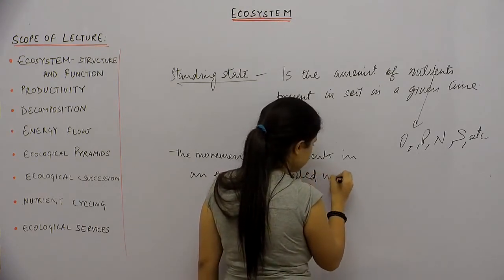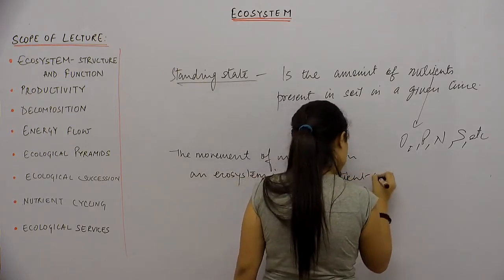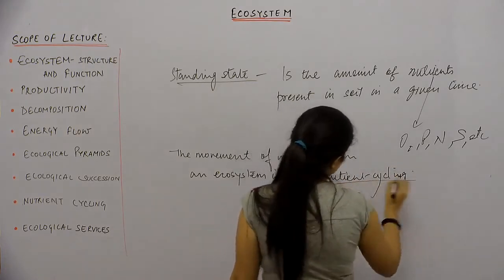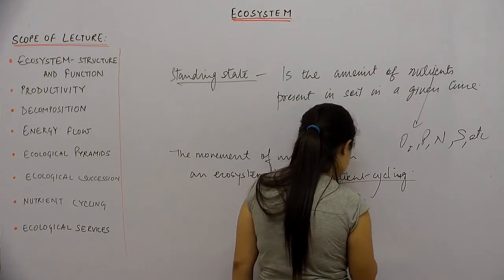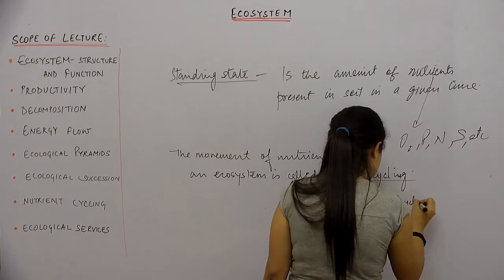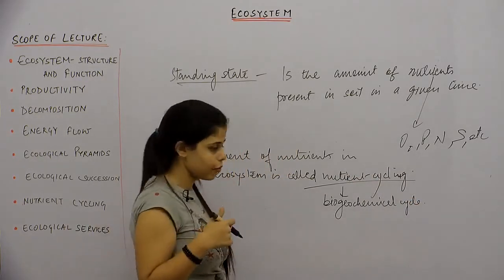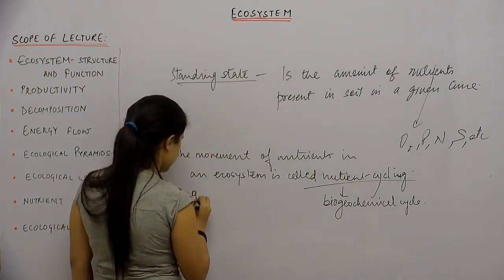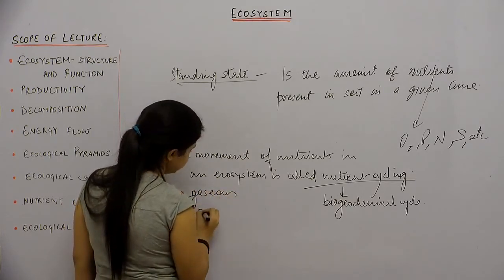Nutrient cycling is also known as the biogeochemical cycle. Nutrient cycles are of two types: the gaseous type and the sedimentary type.